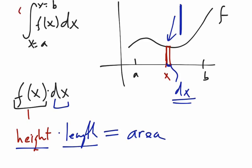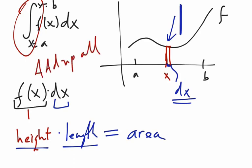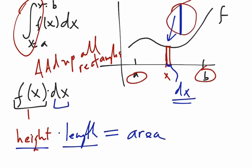The integral means that I add them all up — add up all the little rectangles from x equals a to x equals b. So you find a rectangle and then you add them all up between a and b.